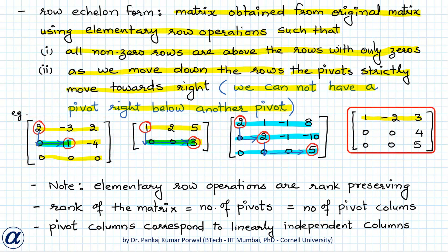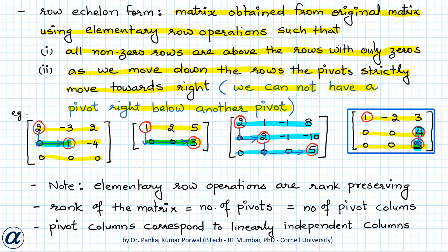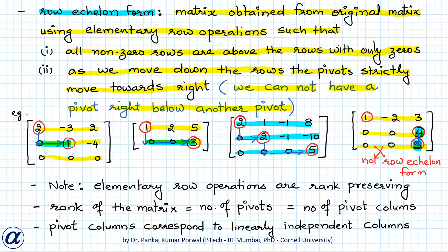Looking at the fourth matrix, all rows are non-zero and we identify the leading non-zero elements. However, when moving from the second row to the third row, the leading non-zero element does not move strictly towards the right — it lies directly below the element in the previous row. So this matrix is not in row echelon form. We can make that element zero using an elementary row operation. Note that elementary row operations are rank-preserving, so the rank of the row echelon form equals the rank of the original matrix.